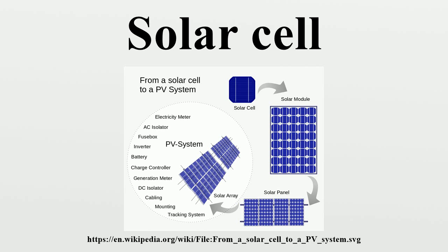Manufacturers of wafer-based cells responded to high silicon prices in 2004 to 2008 with rapid reductions in silicon consumption. In 2008, according to Jef Poortmans, director of IMEC's organic and solar department, current cells use 8 to 9 grams of silicon per watt of power generation, with wafer thicknesses in the neighborhood of 200 microns. First Solar is the largest thin-film manufacturer in the world using a CdTe cell sandwich between two layers of glass. Crystalline silicon panels dominate worldwide markets and are mostly manufactured in China and Taiwan.